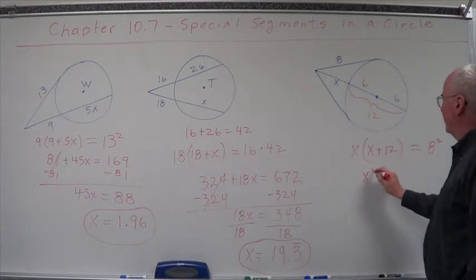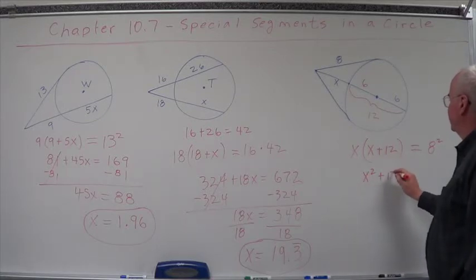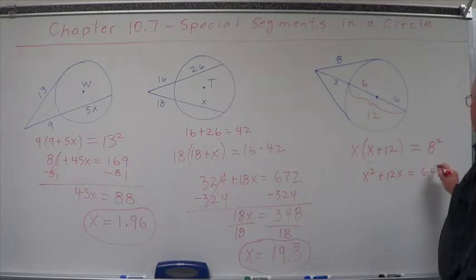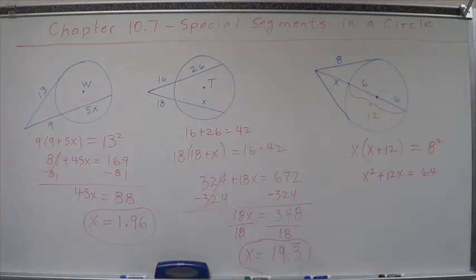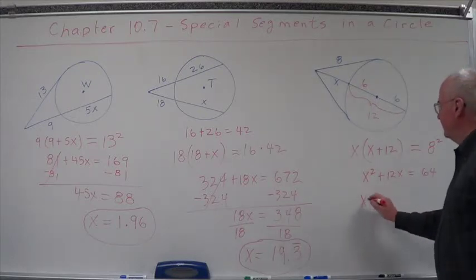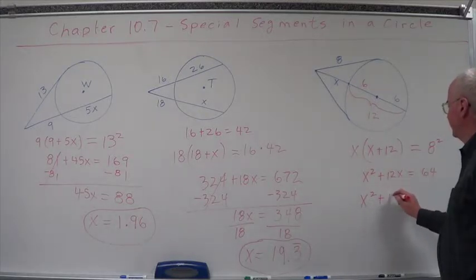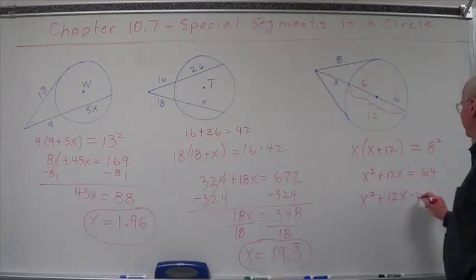So this is going to be x squared plus 12x equals 64. Let's get that into quadratic form that we can put in our calculator. x squared plus 12x minus 64 equals 0.